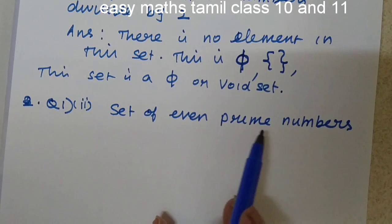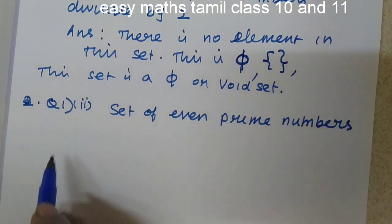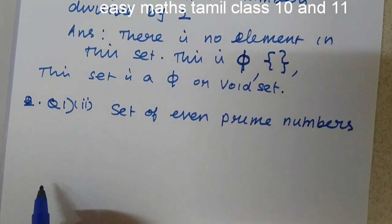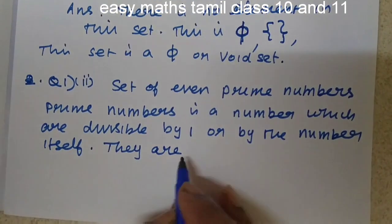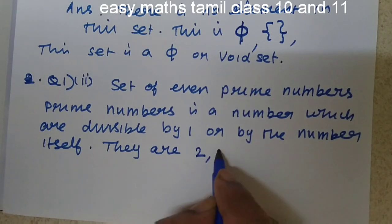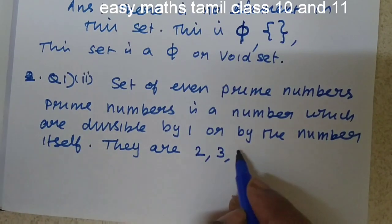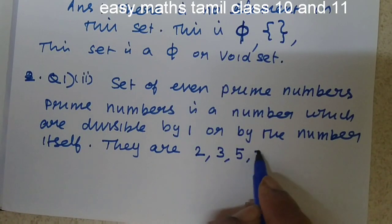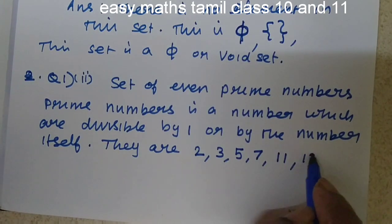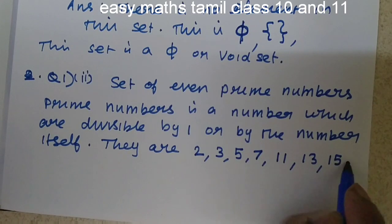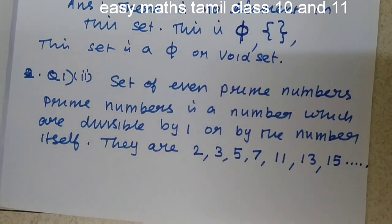Set of even prime numbers. What is a prime number? A prime number is a number which is divisible by 1 or by the number itself. They are 2, 3, 5, 7, 11, 13, 15, 17, 19, etc.